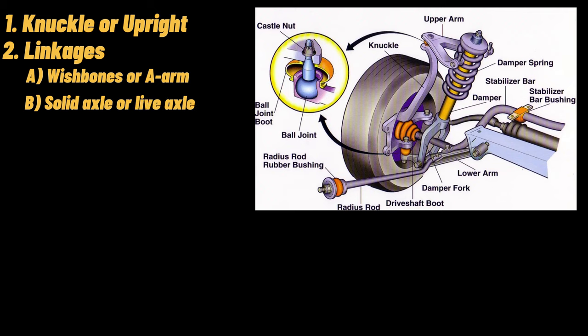B. Solid Axle or Live Axle. It is the main axle of the tires. It connects the main body of the vehicle with the knuckle of the tire. The whole weight of the body lies on this solid axle. The suspension system is mounted on this axle between the body and the axle. This is commonly used in heavy-duty vehicles.